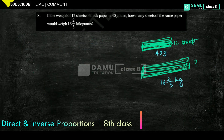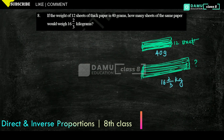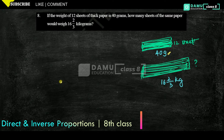Thanks for watching, please subscribe. In this module we are going to discuss the eighth question: if the weight of 12 sheets of thick paper is 40 grams, how many sheets of the same paper would weigh 16 and 2/3 kilograms?